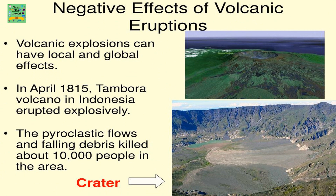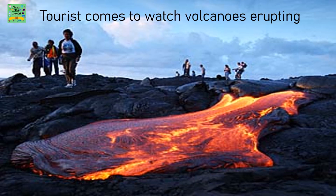Negative effects of volcanic eruptions: volcanic explosions can have local and global effects. In April 1815, Tambora volcano in Indonesia erupted explosively. The pyroclastic flows and falling debris killed about 10,000 people in the area. Tourists also come to watch volcanoes erupting.